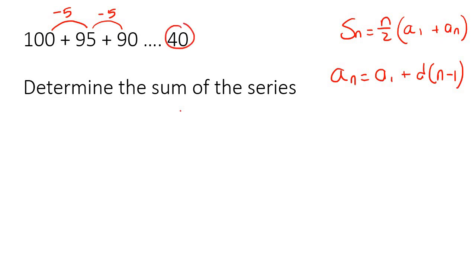So we could do that by looking at this very last term, and we could fill that in there. A1 is 100. The difference is negative 5. So you could say plus negative 5, or you could just say negative 5 like that. And then n we don't know.